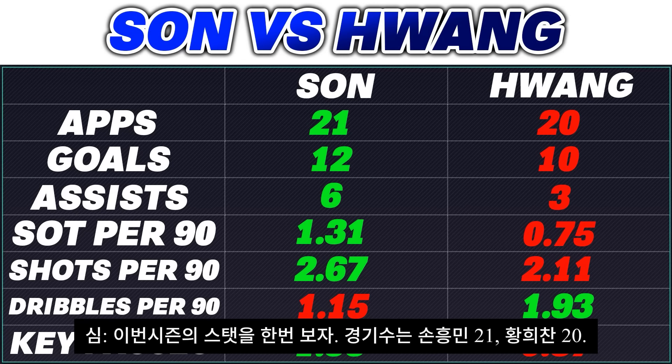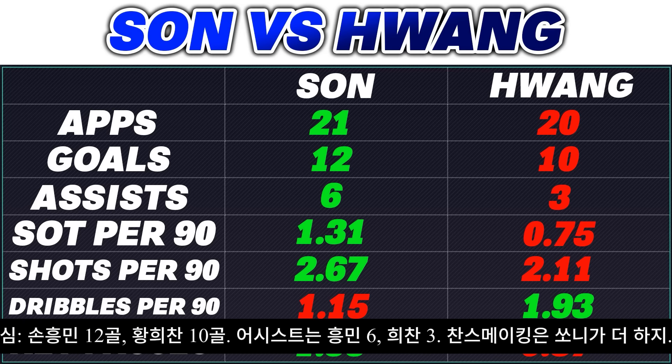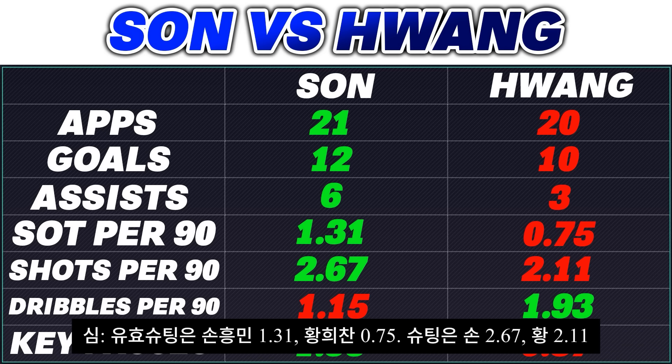In terms of appearances, 21 for Son, 20 for Hwang. Goals: 12 for Son, 10 for Hwang. Assists: 6 for Son, 3 for Hwang — so Son's really been a lot more creative. Shots on target per 90: Son's well in front at 1.3 versus 0.75. Shots in total are a bit more similar, 2.67 to 2.11.